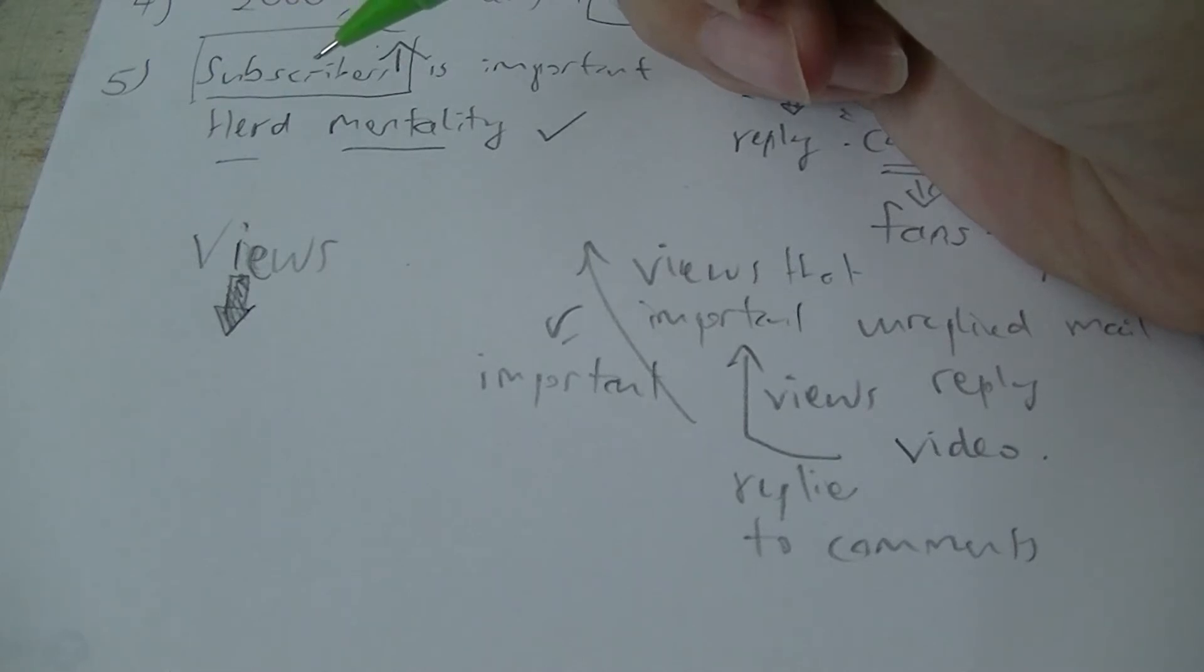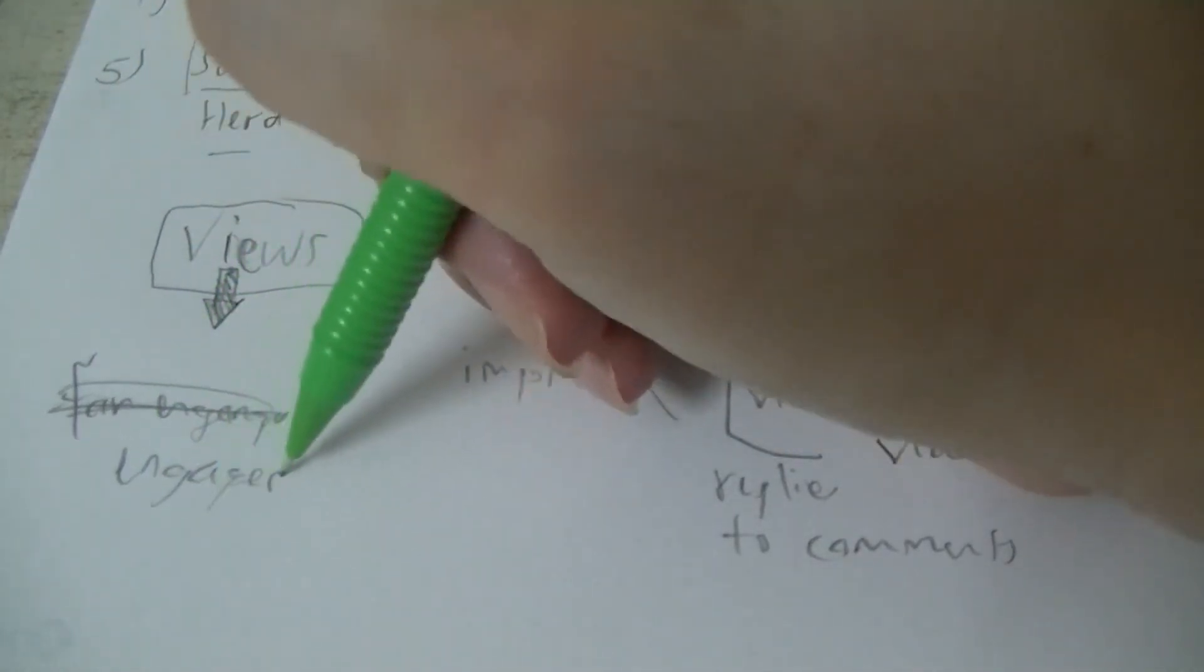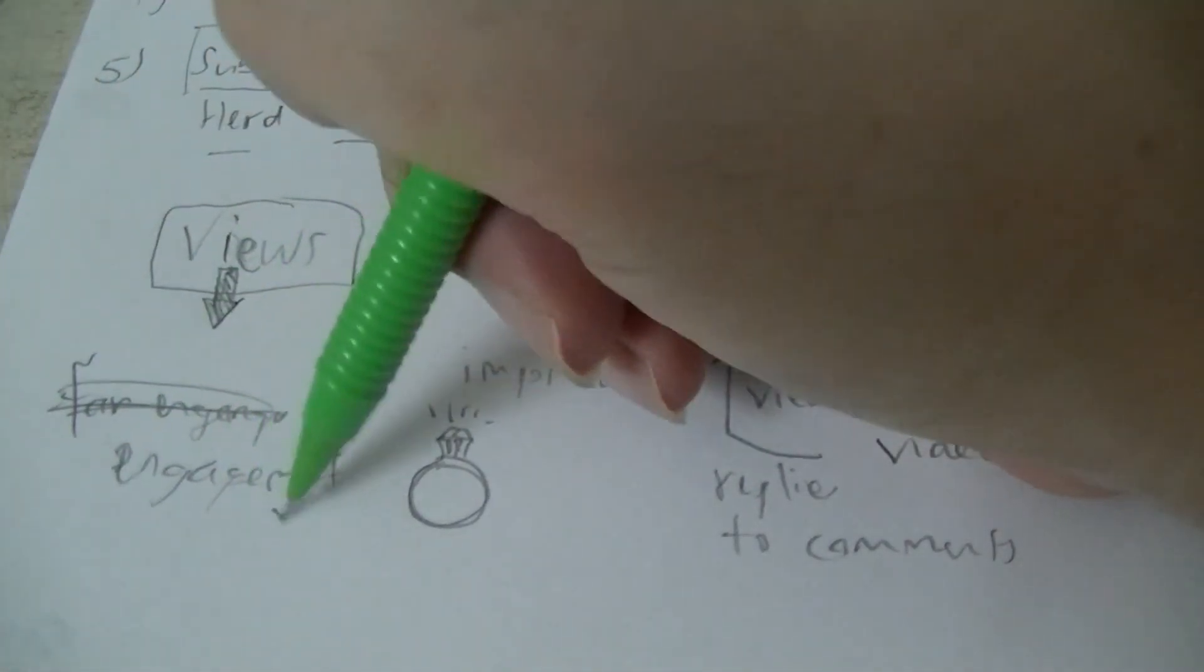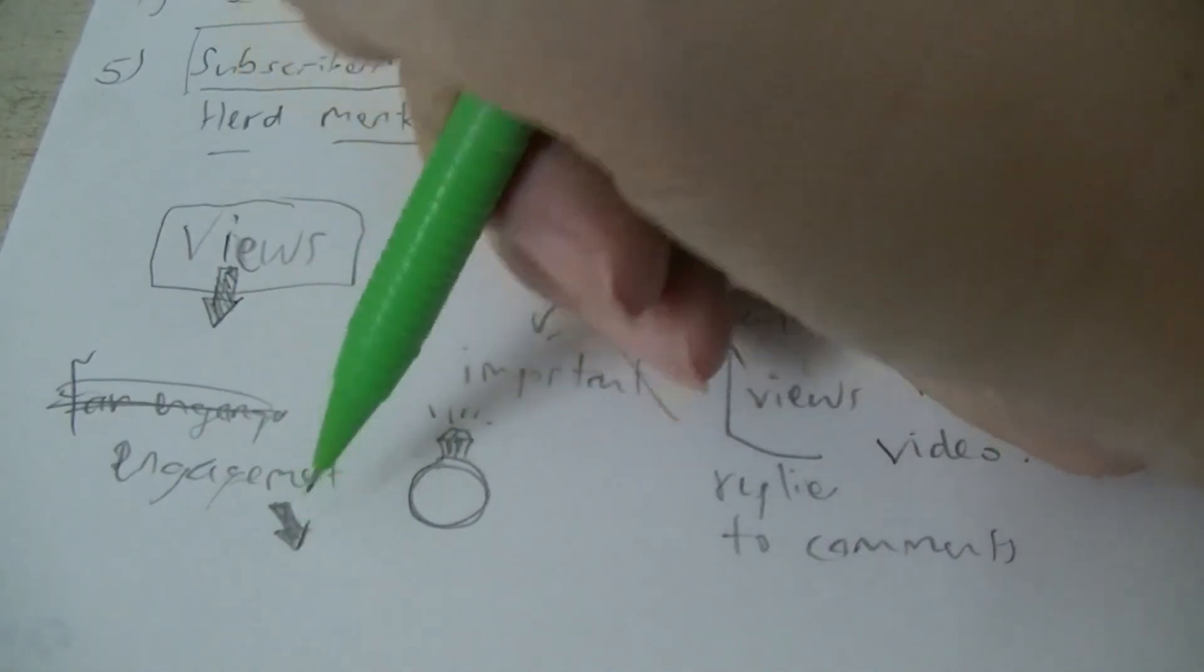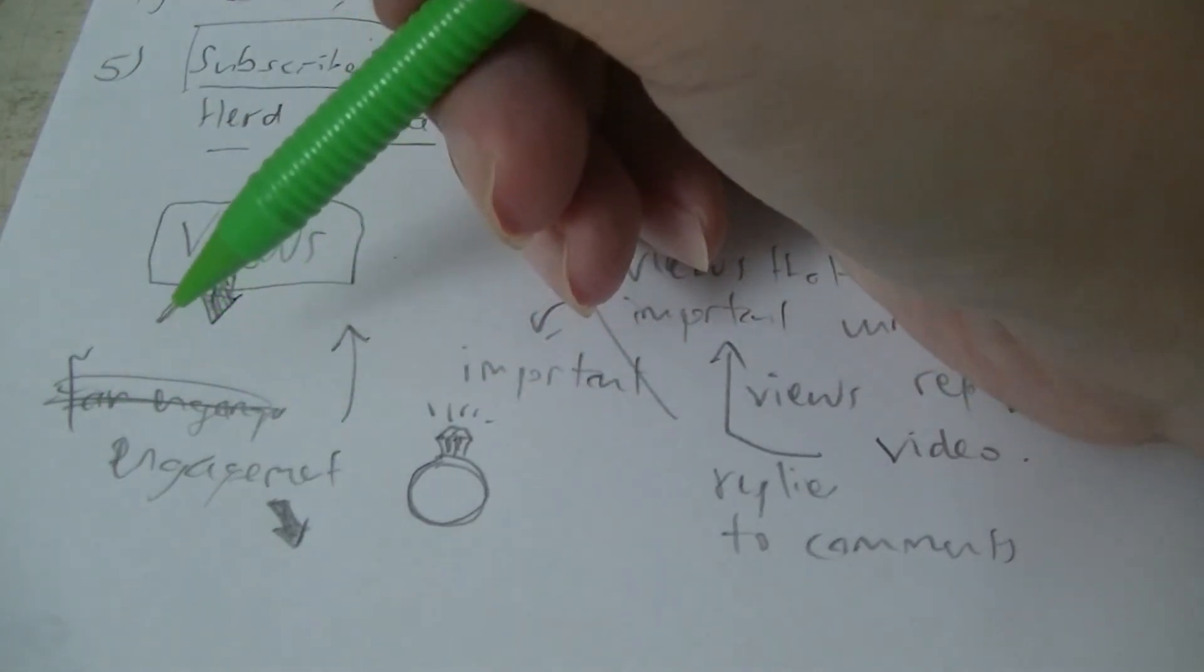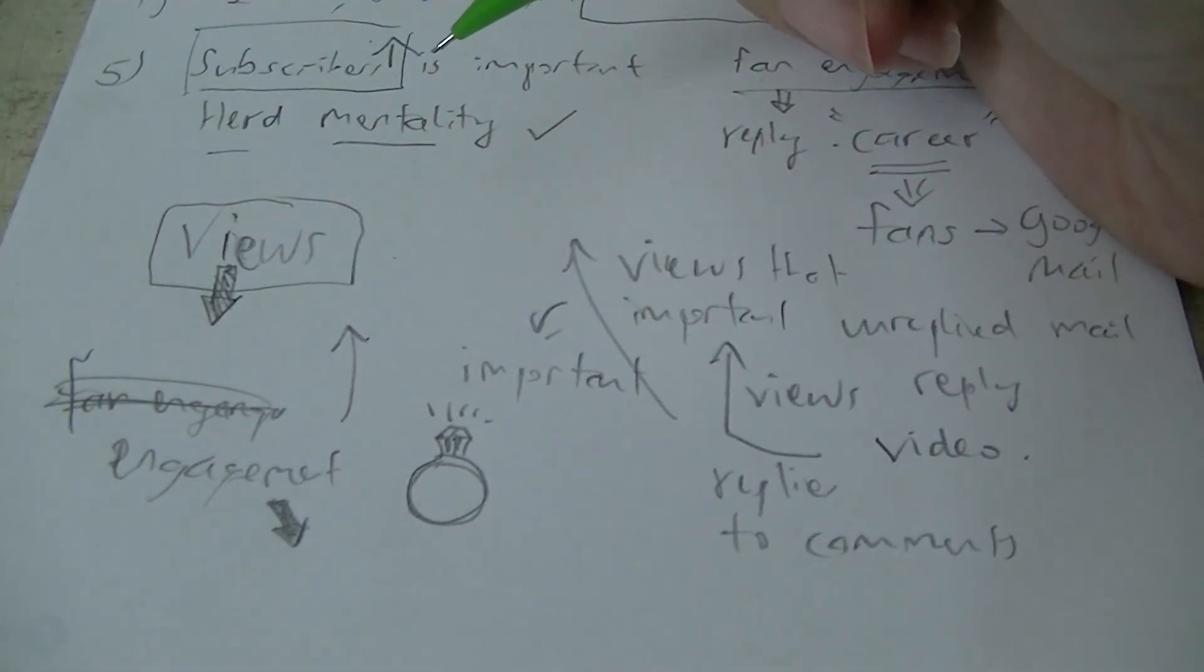But nowadays, views are not important anymore and engagement is more important - not the marrying type as illustrated by this ring with a diamond, but engagement which means that the viewer will keep on watching your video from the beginning to the end. That is more important compared to views. So if you want to earn more money, make sure you have interesting content that keeps it interesting enough for the viewer to watch your whole video, and when that happens, the money will be there for you hopefully to collect.